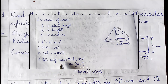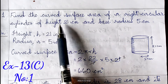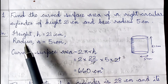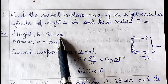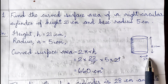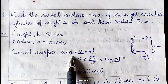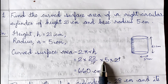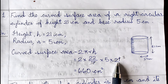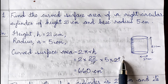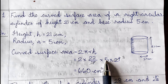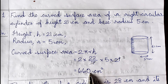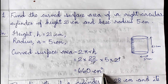Question 1: Find the curved surface area of a right circular cylinder of height 21 cm and base radius 5 cm. Height h = 21 cm, radius r = 5 cm. Curved surface area = 2πrh = 2 × (22/7) × 5 × 21. Cancelling 7 and 21 gives 3; then 3 × 5 × 2 × 22 = 660 cm². Therefore the curved surface area is 660 cm².